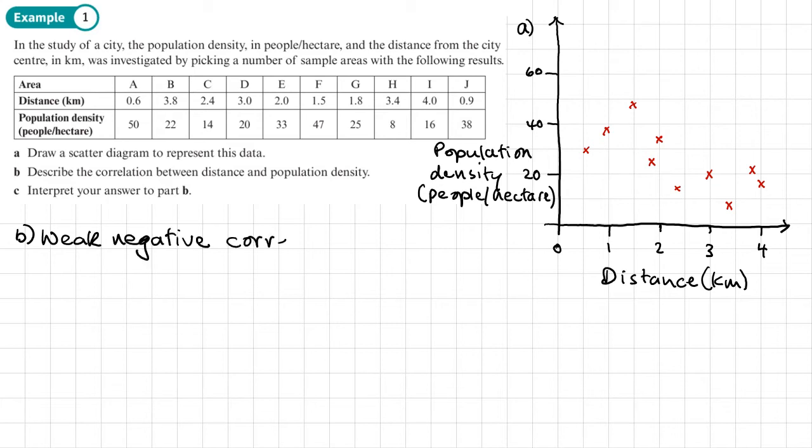Now in an exam, if you just described it as a negative correlation, that should be fine. Now part C, interpret your answer to part B.